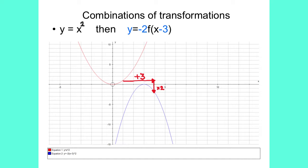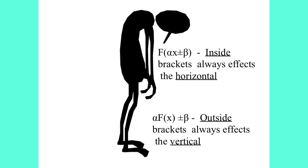If we start with the graph y equals x squared, then draw the graph y equals minus 2 f of brackets x minus 3, the original graph is moved three spaces to the right — the minus 3 part — but it is then reflected in the x-axis, and then all the y-coordinates are multiplied by minus 2. The easy way to remember the transformations: inside brackets always affects the horizontal, in other words the x-coordinates; outside brackets always affects the vertical, in other words the y-coordinates.